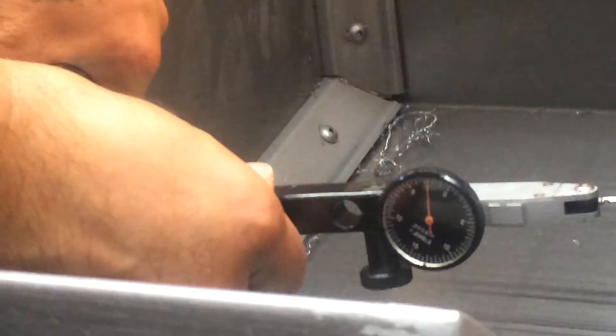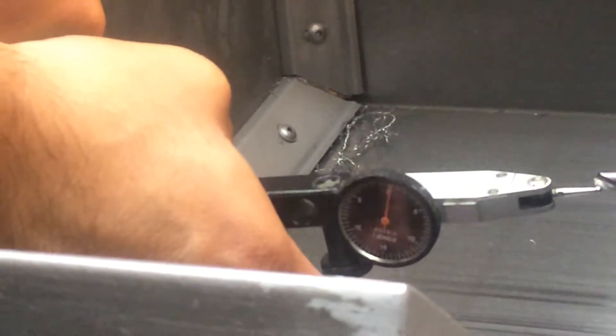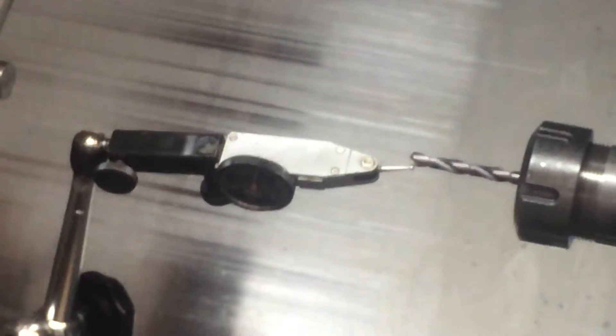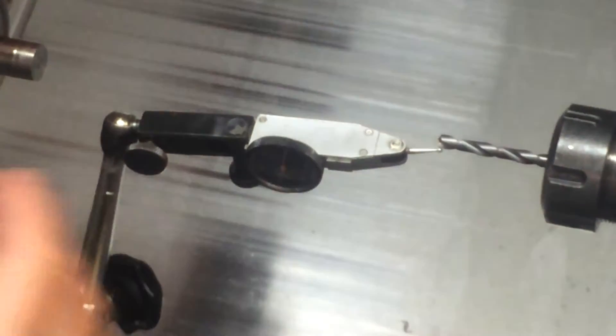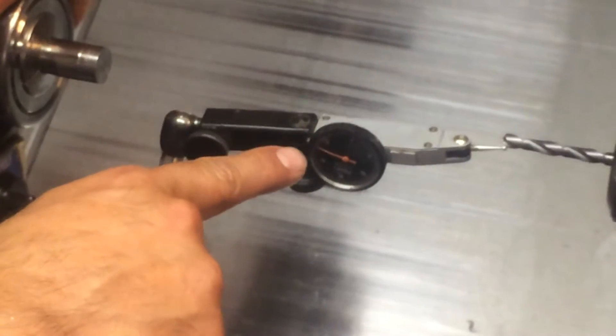I'm going to place the needle close to zero and move the spindle back and forward until I can find a zero point. What I'm doing is I'm trying to find the high spot on the flute of that drill. So I go up to the top of the flute, and if I go past it, then the needle drops.